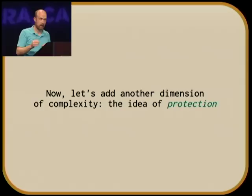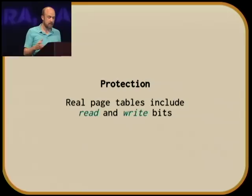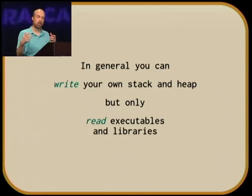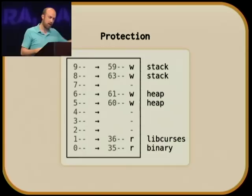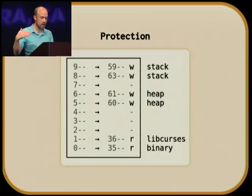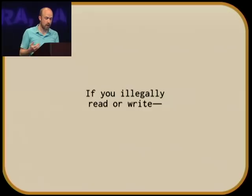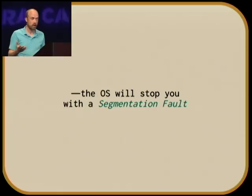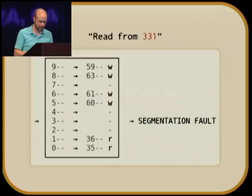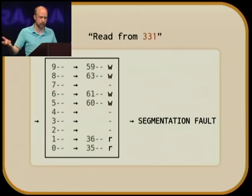Real page tables include separate read and write bits. The rule is that you can write to your own stack and heap as much as you want, but you're only allowed to read executables and libraries. If you illegally read or write, the OS gets signaled, and instead of responding to a page fault by giving you more free memory, the OS will stop you with what's called a segmentation fault — a page fault that made the OS angry. You also can't write to certain addresses even if they're mapped, if they're marked read-only.